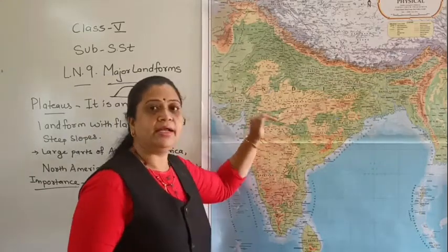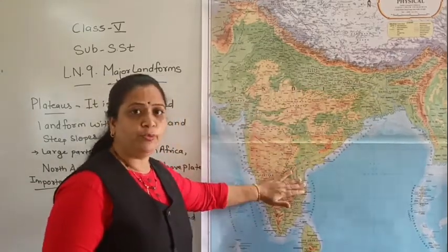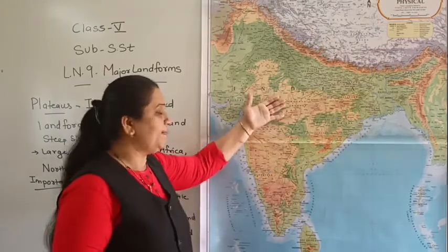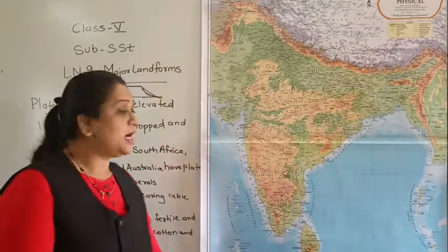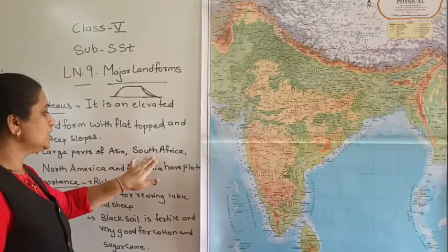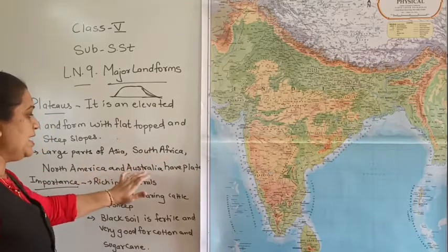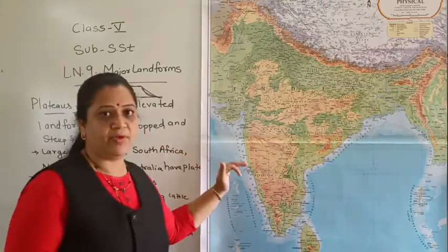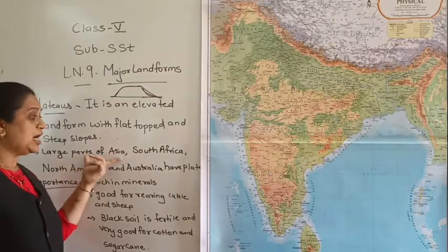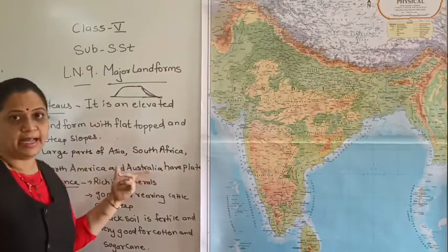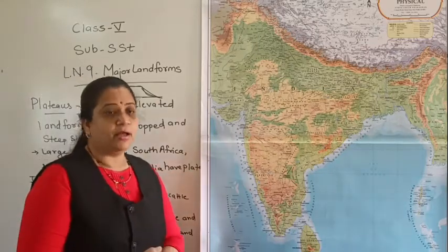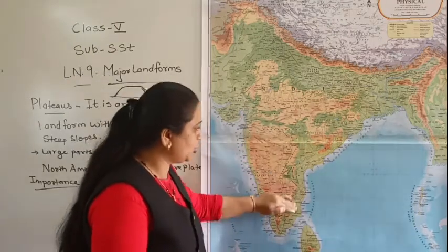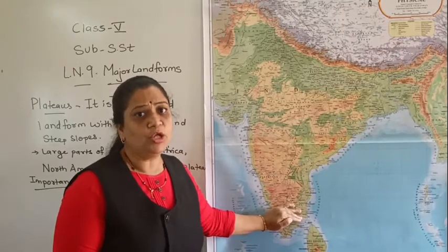River Narmada divides the plateau into two parts: the Deccan Plateau and the Southern Plateau. Large parts of Asia, South Africa, North America, and Australia have plateau regions. When we refer to our India map, we see that most of the southern part of India is covered with the plateau region.